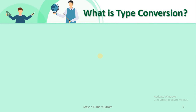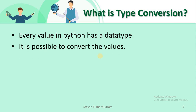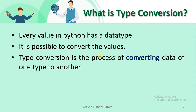First, let us try to understand what is type conversion. Every value or every object in Python has a data type. If we declare 20, it has the data type integer internally. If we write 20.5, the data type of that value is float. As per our requirement, whenever we are working with programs, there is a need to convert the value of one data type to another. Type conversion is the process of converting data of one data type to another data type.